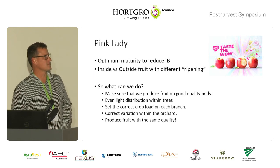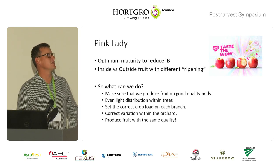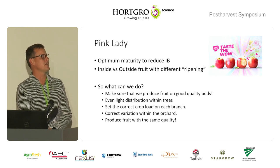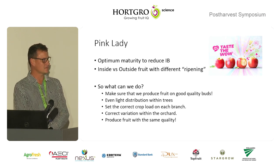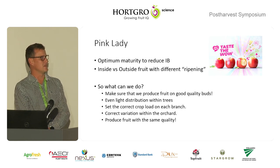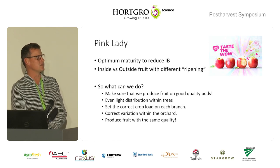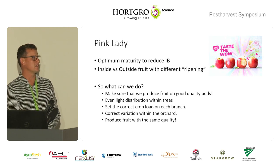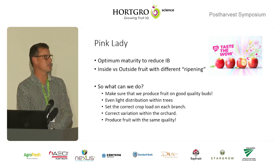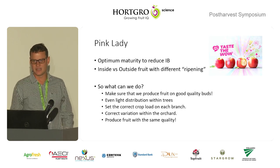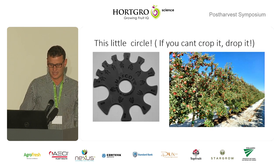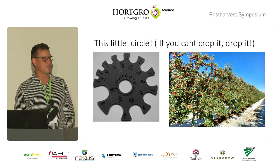So, let's say we want to produce some pink ladies. We know we have to harvest them at an optimum maturity to reduce the risk of internal browning. We know we have the issues with inside and outside fruit being different. What can we do? We start off by saying we need to produce fruit on good quality buds, with even light distribution within the tree, and set the correct crop load on each branch. Finally, when we have that correct, we can look at the orchard as a whole and ask: within my orchard, how do I further correct for the variances? That's the final step. Hopefully, if we do all of this correctly, we will reduce our risk of physiological disorders.